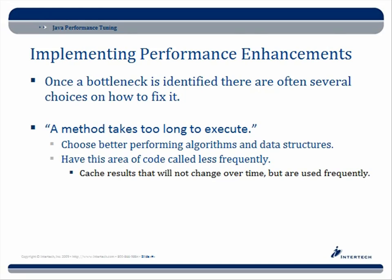So we'll get to some code in a second. Let's talk about some of the different windows we saw and what those mean. Once a bottleneck is identified, there are often several choices on how you can fix it. For example, if you find that a method takes too long to execute, you can choose better programming algorithms and data structures, or you can decide to have that area of code called less frequently.